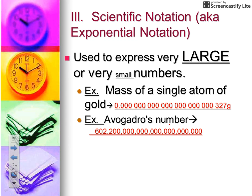Another number that we talk about in chemistry is Avogadro's number. We use it to convert from our representative particles to something called the mole, which we'll learn about later. Notice this is an extremely large value — much greater than one. If you look at the ending zeros, these are called trailing zeros; there are 20 of them. Again, you could easily miscount these zeros and write down the incorrect number.